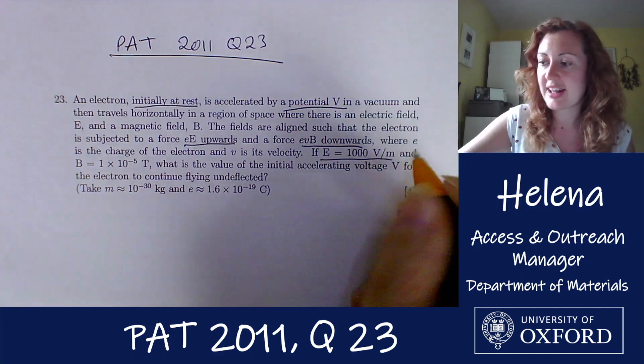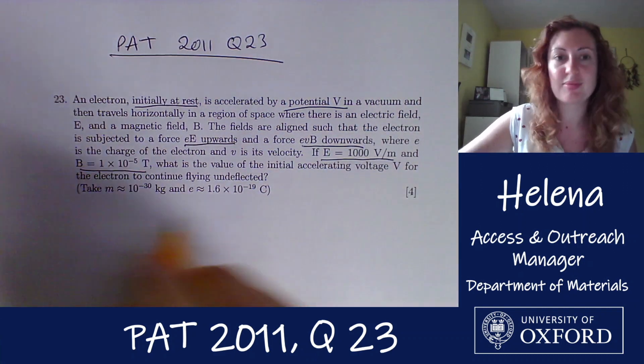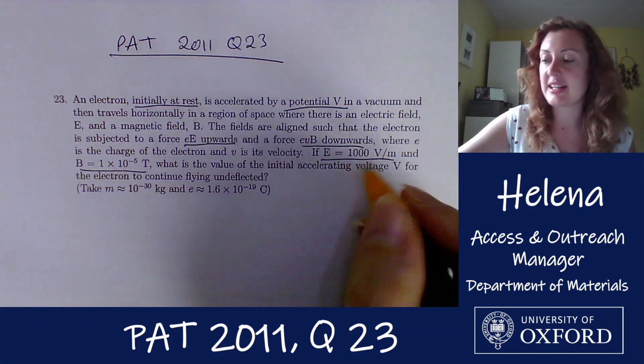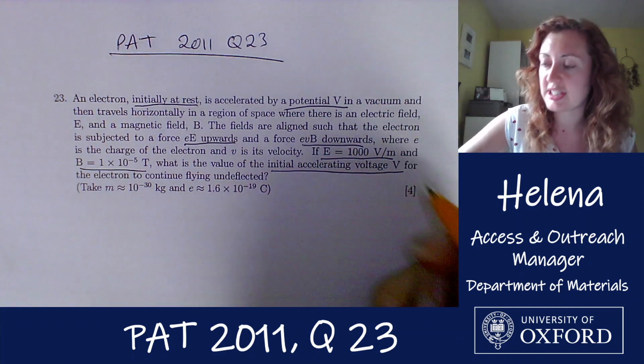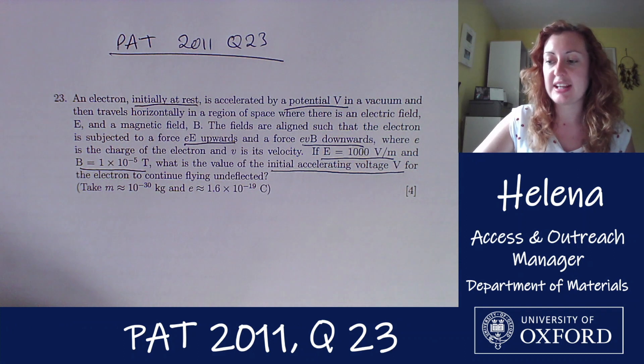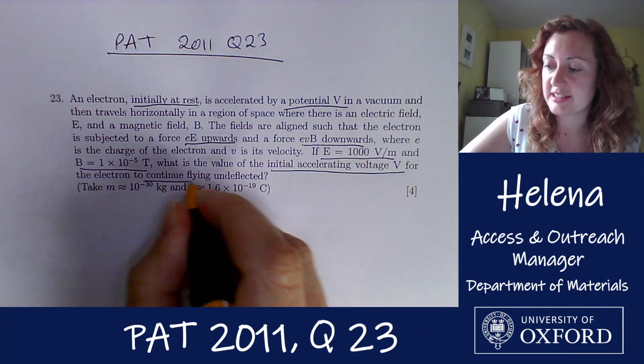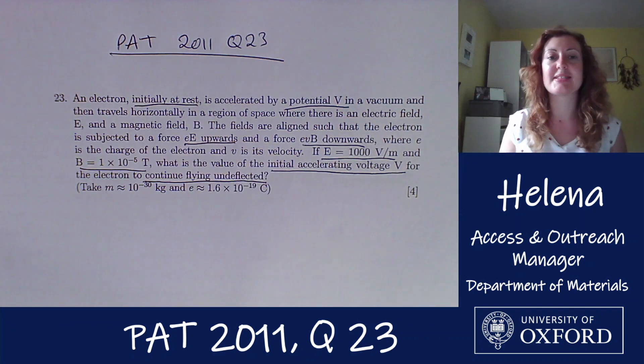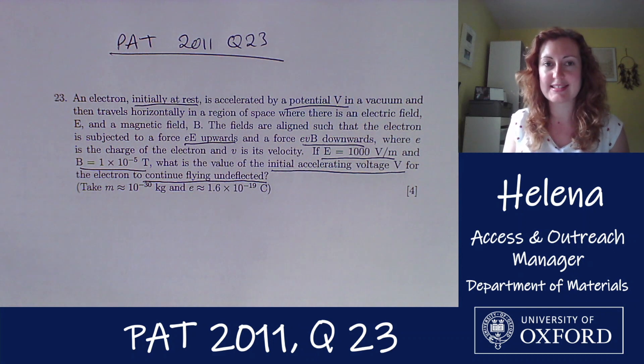If E is this value and B is this value, what is the value of the initial accelerating voltage V for the electron to continue flying undeflected? Okay, so that's quite a chunky wall of text there, so let's break it down and have a look at what's going on.